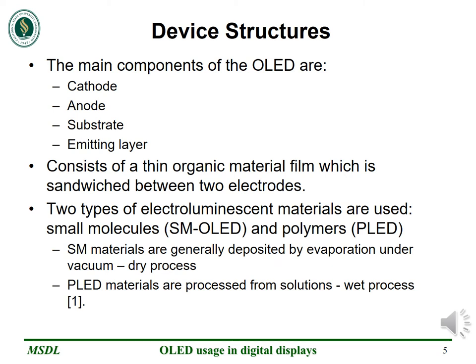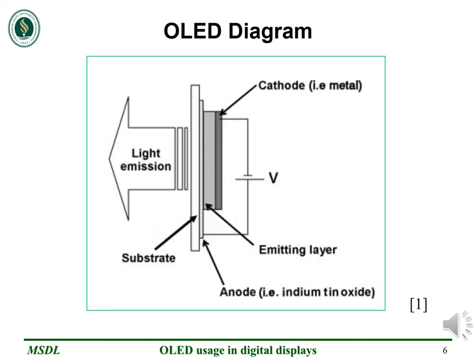The device structure of an organic LED consists of a thin organic material film which is sandwiched between two electrodes. The electroluminescence performance is generally very similar for the two classes of materials — the SM organic LED and the polymer LED — and the main difference is in the deposition process of the thin organic film. Here we can see the organic LED diagram. The anode is transparent and is usually made of indium tin oxide, while the cathode is reflective and is made of metal. The thickness of the organic layer is very thin and can range anywhere between 100 and 115 nanometers.